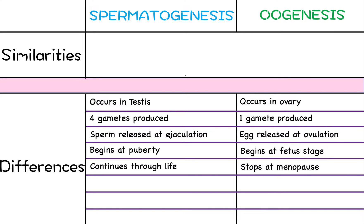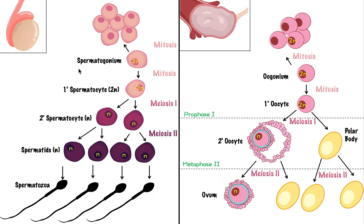A related difference: males consistently make sperm every minute of every day — it happens continuously. Whereas for a female it happens on a monthly cycle. They don't make eggs every single minute; they make one every menstrual cycle. So males make sperm constantly the whole time, whereas a female makes one every cycle — it happens on a cycle basis.